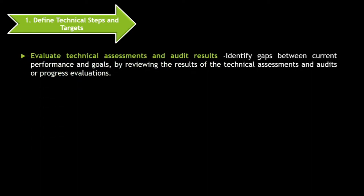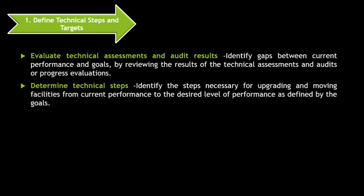Now let us discuss about defining technical steps and targets. In order to do so, you need to evaluate technical assessments and audit results — that means identifying the gap between the current performance and your goals and target plans. By reviewing the results of technical assessments and audits, you can evaluate your progress as far as energy conservation is concerned. Then, you have to identify the steps necessary for upgrading and moving facilities from current performance to the desired level of performance.